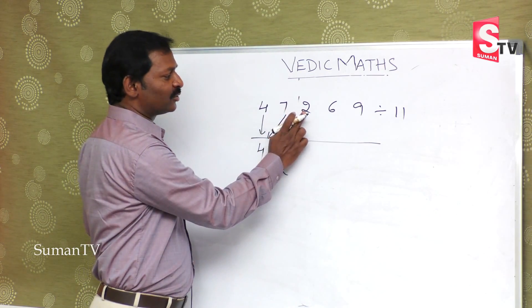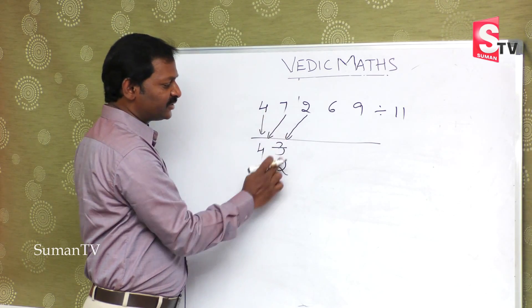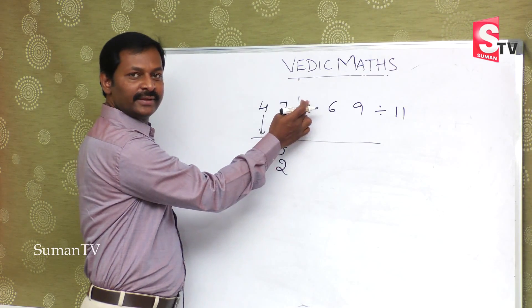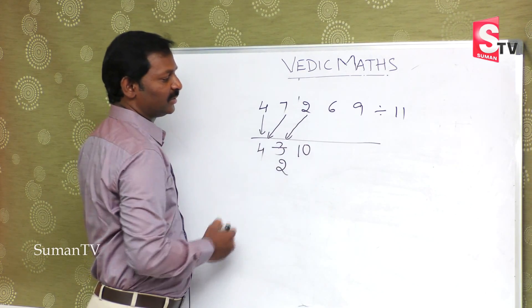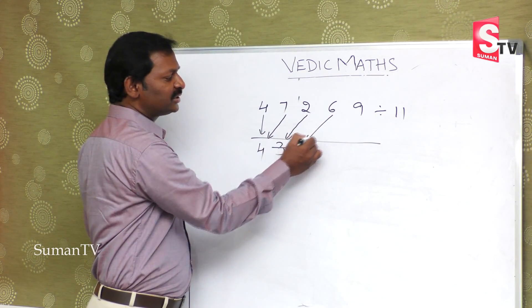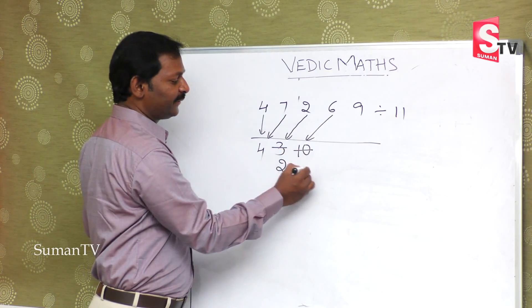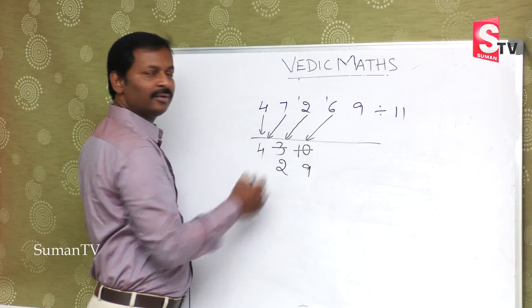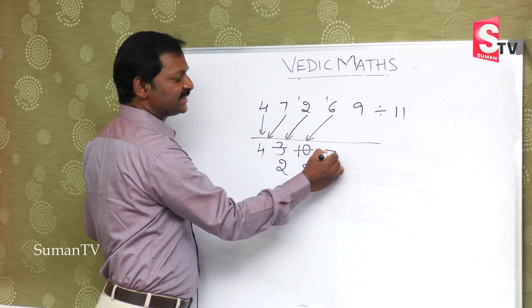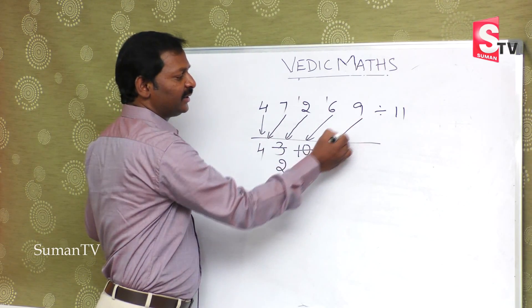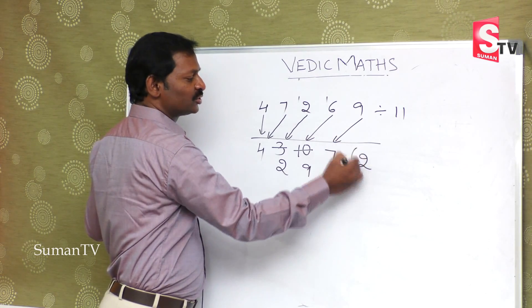Suppose it is units. We decrease from the tens place, so it becomes 12 minus 3, that is 9. Next, 6 becomes 9, so 19 minus 9 equals 10. Finally 9 minus 7 is 2.